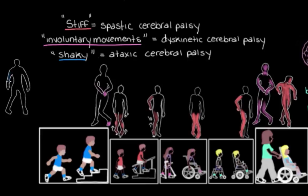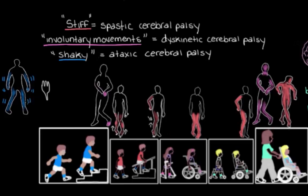If this shakiness affects the arms or hands, the person may have a hard time grabbing or using objects — they might under- or overshoot when reaching for something like a fork, and struggle to steady their hand to use it. If the shakiness affects the legs, they'll likely be unstable when standing or walking, leading to falls. People often widen their stance for more stability. The shakiness can also affect the face, throat, and eyes, making it hard to speak, swallow, or quickly shift their gaze.